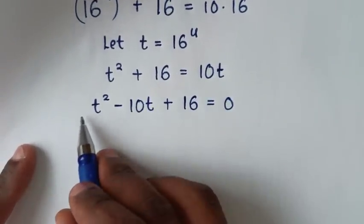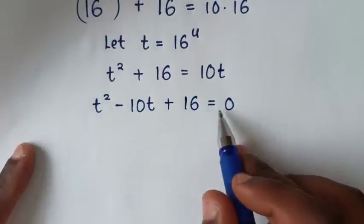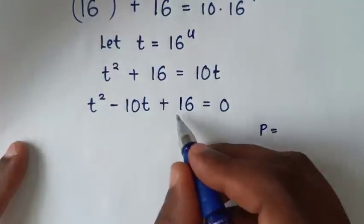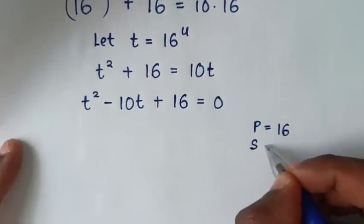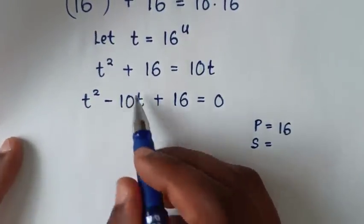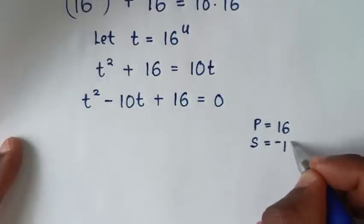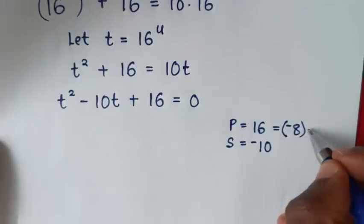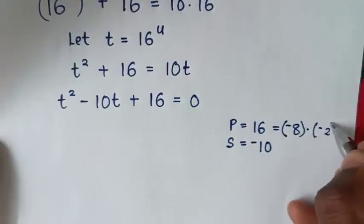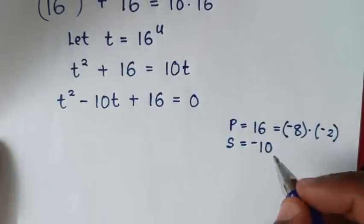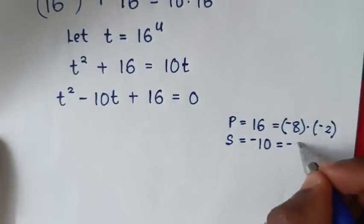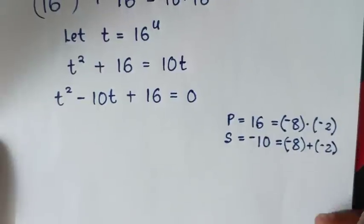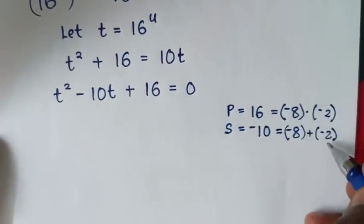From this quadratic equation, it can be solved by grouping and factorization. The product is 16, and the sum is the coefficient of t, which is negative 10. From 16, it is the product of negative 8 times negative 2: negative 8 times negative 2 is positive 16, and the sum is negative 8 plus negative 2, which is negative 10. So we'll use these two factors, negative 8 and negative 2.